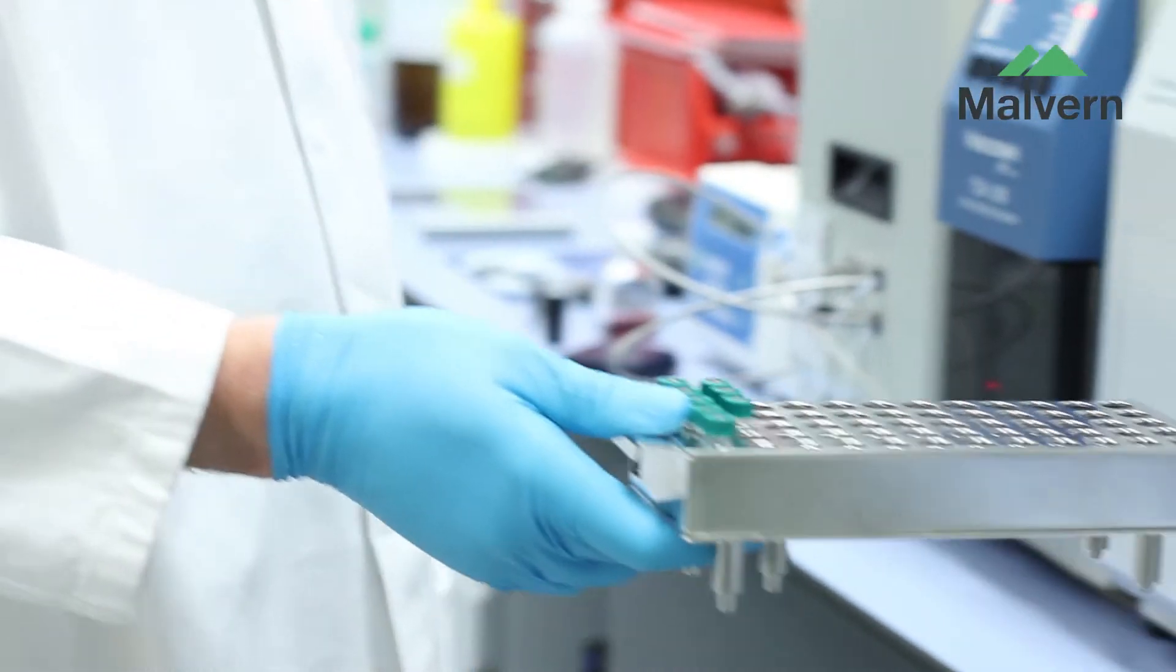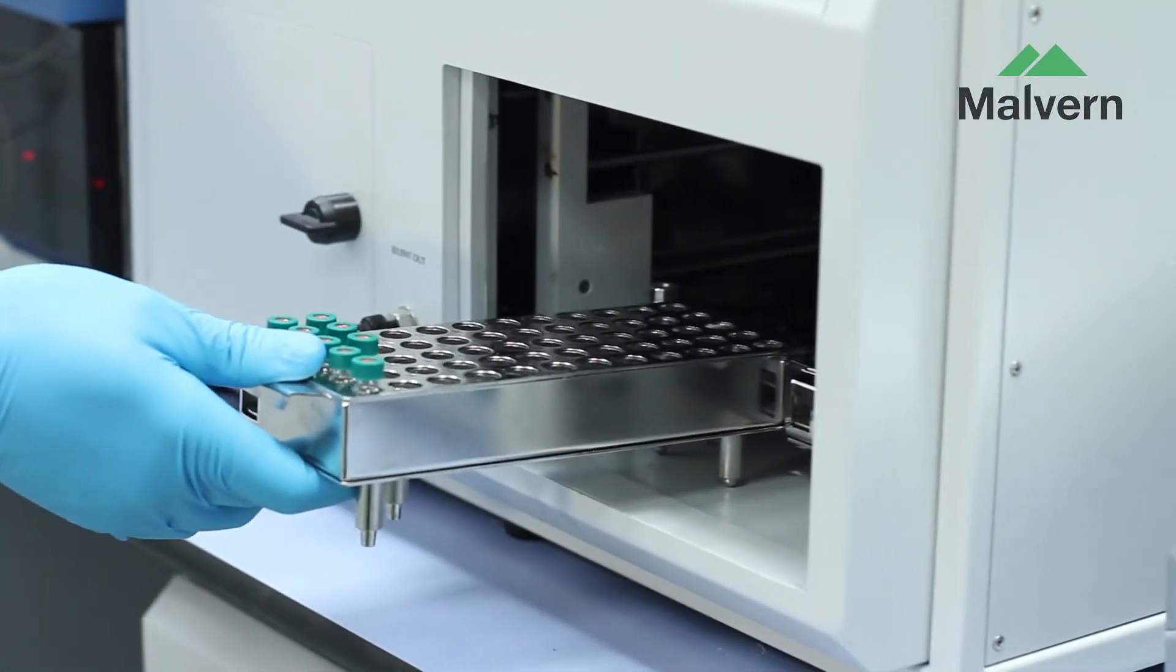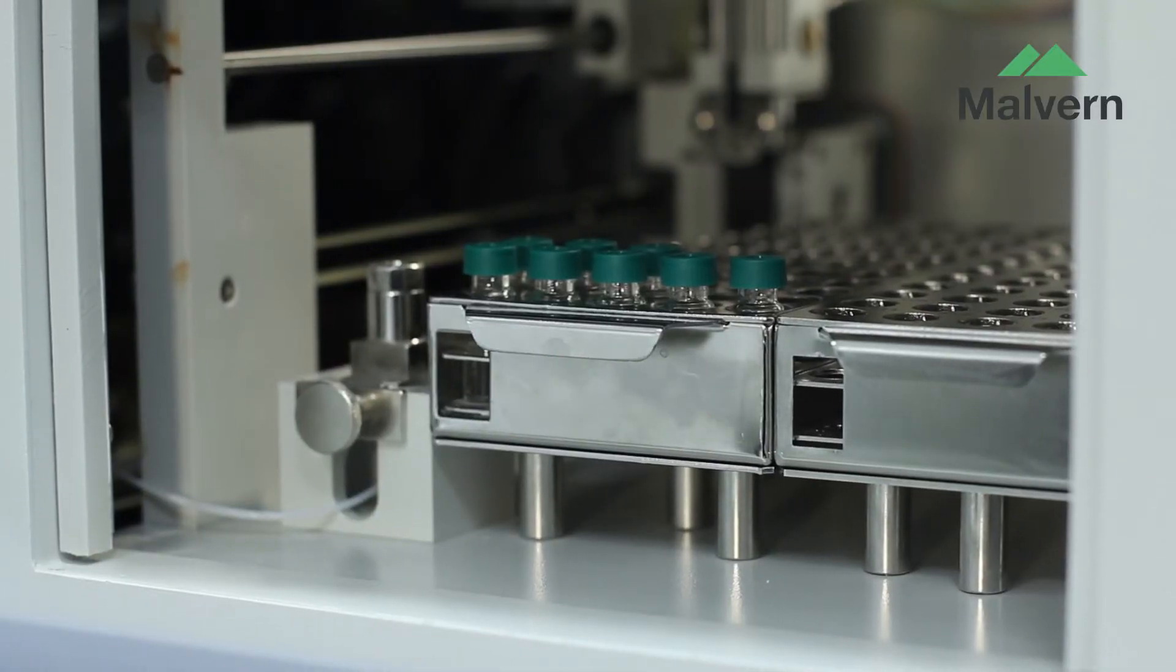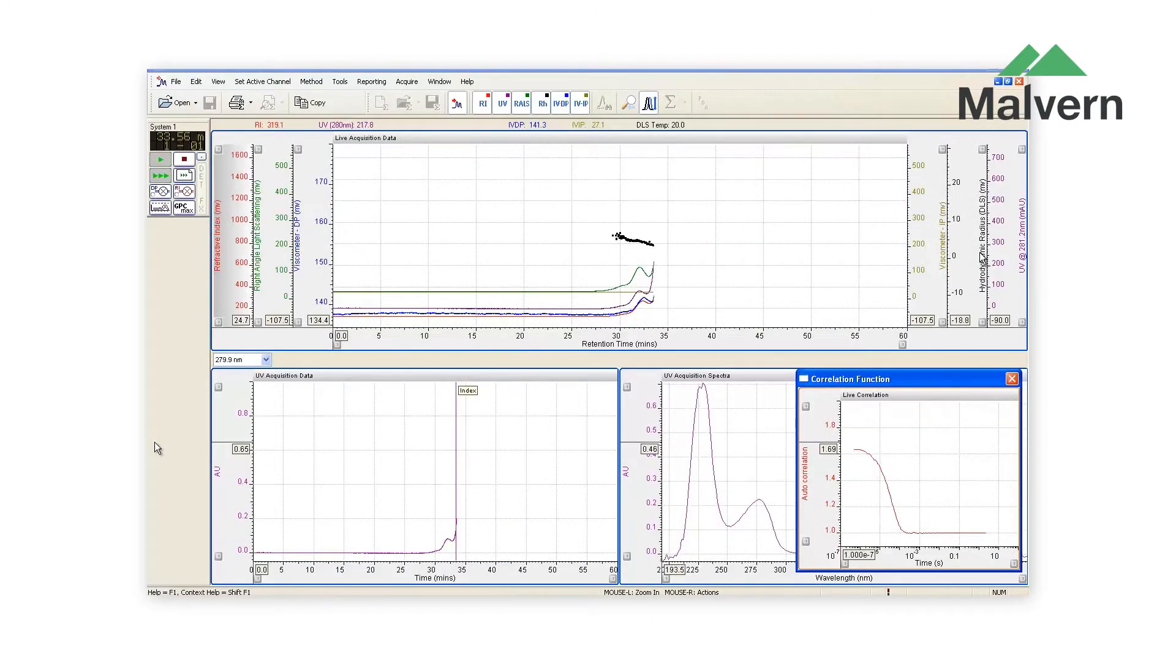When used alongside your ultraviolet or refractive index detector, it gives you absolute molecular weight and size. This enables confirmation of the oligomeric state of your protein, quantification and sizing of any aggregate present, and much more.